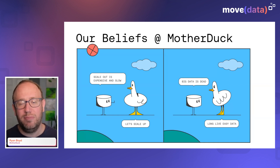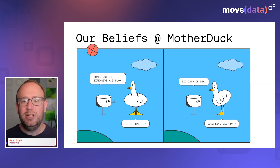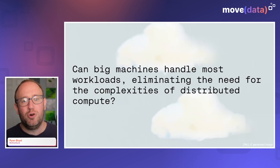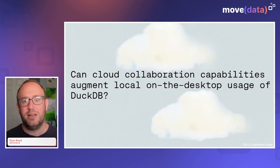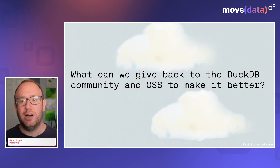Now that I've talked a little bit about DuckDB, let me say a little about MotherDuck and what we're building. We don't have a product yet, but we're building a serverless DuckDB that allows your laptop supercomputer to work in concert with the cloud. We believe that scale-out is expensive and slow and we should scale up. We believe that big data is dead — long live easy data. We believe that your laptop is faster than your data warehouse, so why should you wait for the cloud? And we believe DuckDB slaps, so let's supercharge it. Here are questions we're trying to answer: Can big machines handle most workloads, eliminating the need for the complexities of distributed compute? Can cloud collaboration capabilities augment local desktop usage of DuckDB? Can query plans decide whether to bring the compute to the data or the data to the compute? And what can we give back to the DuckDB community and open source project to make it better?